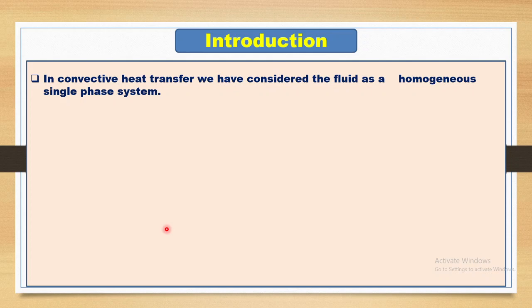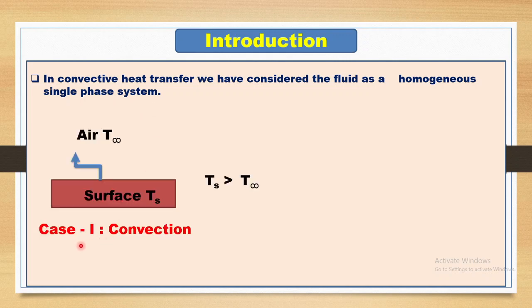Let us start with the introduction. In convective heat transfer discussed so far, we have considered fluid as a homogeneous single-phase system and it is not undergoing any phase change. For example, in case 1, heat transfer by convection from a surface at temperature Ts to air at temperature T infinity, such that Ts is greater than T infinity. When heat transfer takes place from the surface to the air, it increases the temperature of air only. The heat being transferred is termed as sensible heat, which increases only temperature while the phase of the air remains constant.